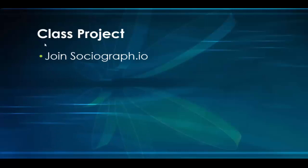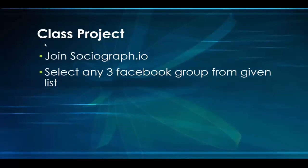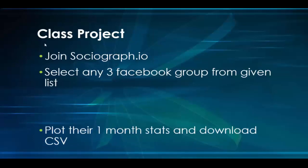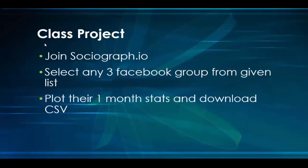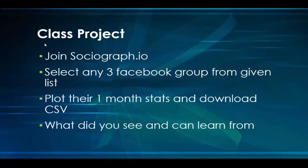Today is the class project. Your tasks are: first, join socialgraph.io; next, select any three Facebook groups from the given list or search for three groups related to your niche using socialgraph.io; then run a one-month analysis and download the CSV file. You can also sort by top contributors and top commenters. Studying individual groups will reveal how each group differs, who the top contributors are, and possibly identify group admins you could collaborate with.